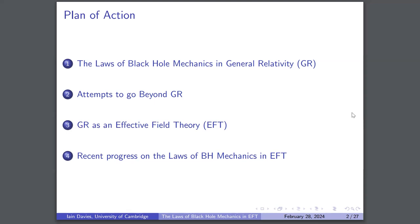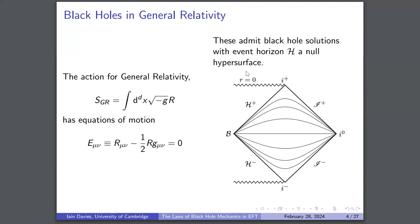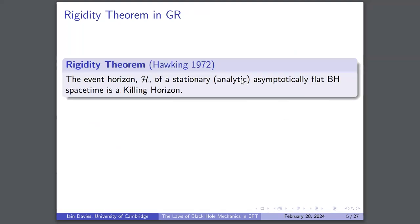Black holes in general relativity — we're familiar with the Einstein equations and the standard action for GR. These admit black hole solutions that always have an event horizon, which is a null hypersurface. For example, we have the Penrose diagram for Schwarzschild. Using the Einstein equations we can prove the rigidity theorem: the event horizon of a stationary asymptotically flat black hole spacetime is a Killing horizon with a Killing vector that is some linear combination of the stationary Killing vector and an axial Killing vector. This was originally proved by Hawking in 1972, with the additional condition that the spacetime is analytic.